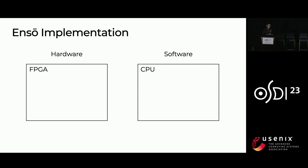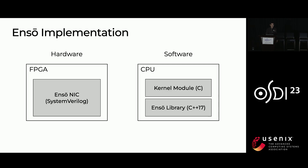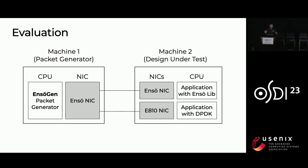Let's see how we implement this in practice. Because ANSO is an interface between the NIC and application, its design encompasses both hardware and software. On the hardware side, we implemented a full NIC that exposes the ANSO interface. On the software side, we have a kernel module used for setup and an ANSO library that exposes a streaming abstraction to the application. Because we have this end-to-end implementation, we can evaluate ANSO on a real system. The first challenge we encountered is that all existing packet generators are based on the packetized interface and suffer from the performance issues I discussed. So none of them is fast enough to stress-test ANSO, and the first application we implemented was ANSOGEN, a software packet generator based on the ANSO NIC interface.